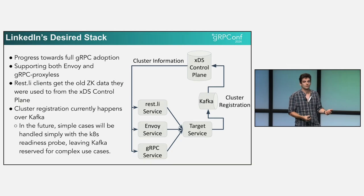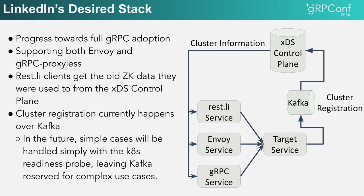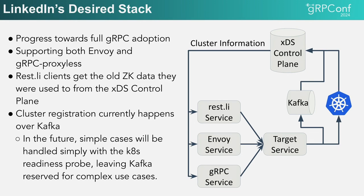What do we want the stack to look like as we migrate to gRPC? The new XDS control plane can support all three client types — RESTly clients get ZooKeeper data from the XDS control plane, while gRPC and Envoy clients get the corresponding XDS configuration. Cluster registration, which used to happen over ZooKeeper, now happens over Kafka because it's much more scalable. In the future, as we migrate towards Kubernetes, we're hoping to mostly get rid of the Kafka registration service, since most services just need to say they're up and ready for traffic.